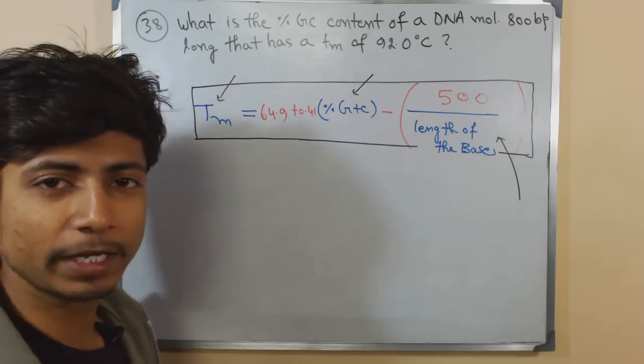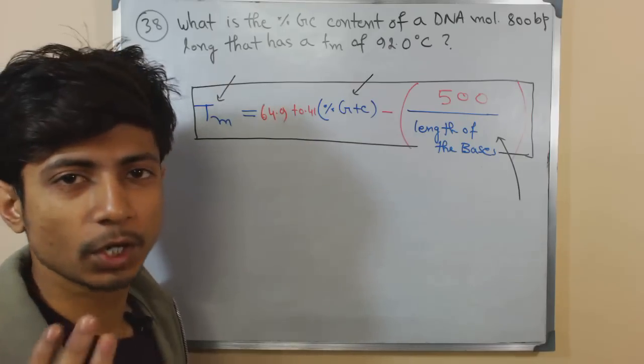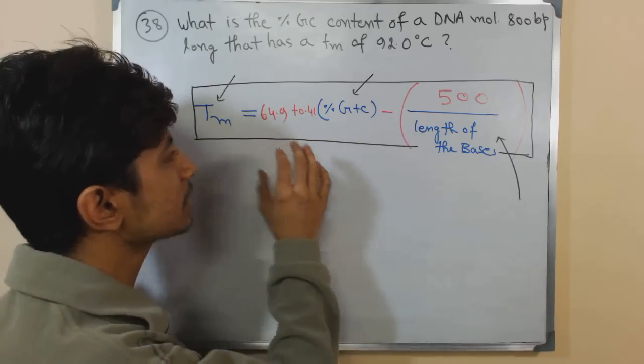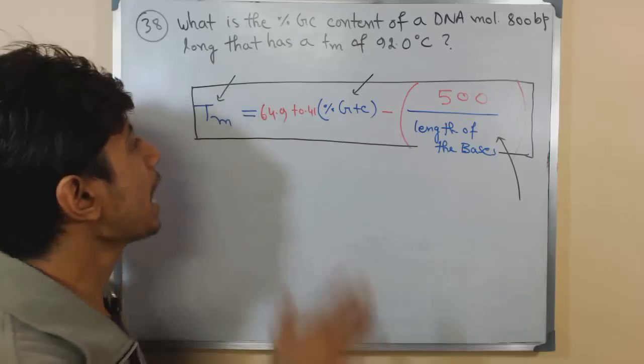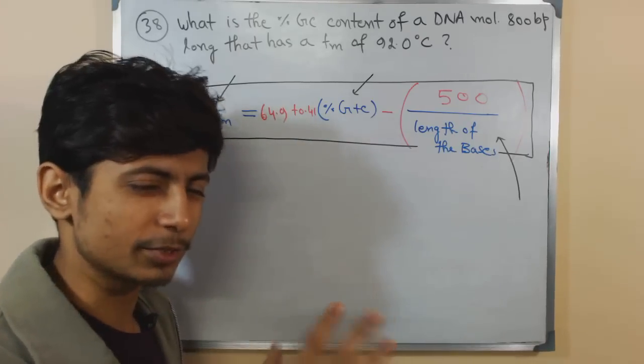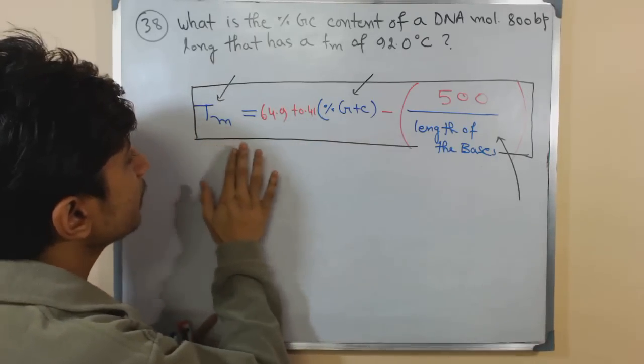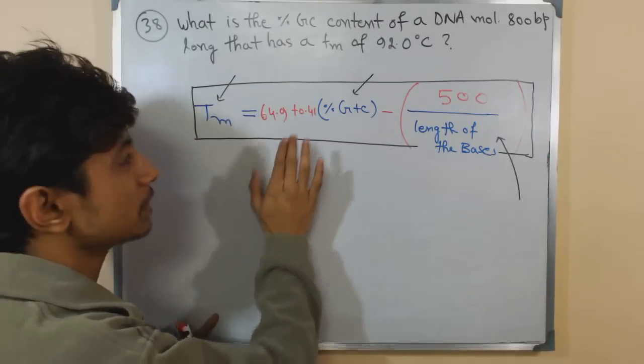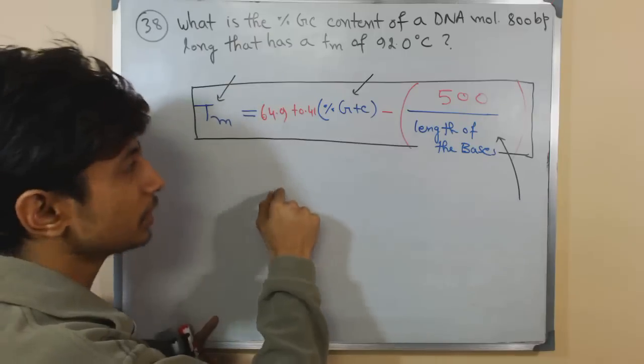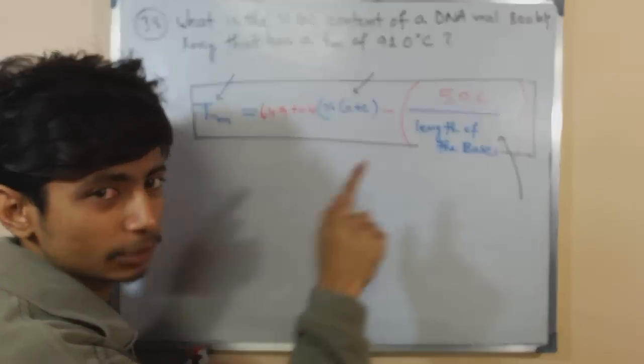Again, a very basic type of question because it only requires a simple formula to calculate. The formula is Tm equals to 64.9 plus 0.41 multiplied by percent GC content minus 500 divided by length of the bases of the DNA.